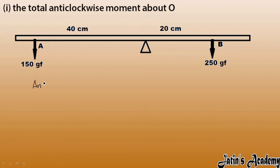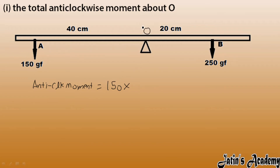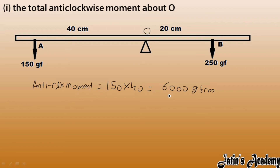Anti-clockwise moment equals force multiplied by perpendicular distance. The force is 150 gram force and the perpendicular distance is 40 centimeters. So 150 × 40 gives us 6000 gram force centimeter. This is the anti-clockwise moment, and it is positive. Remember this value: 6000 gram force centimeter.